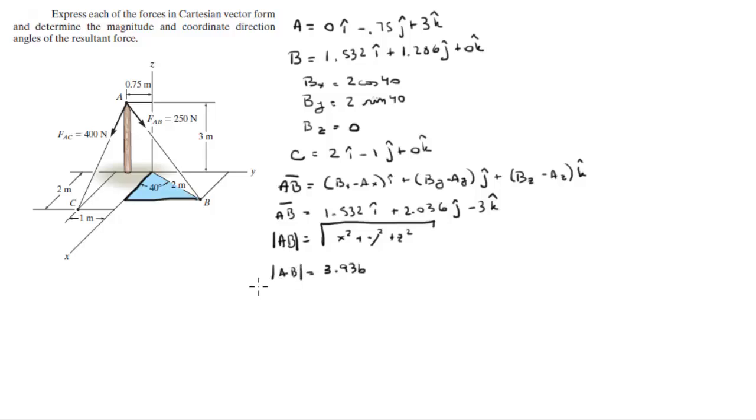So now what you're going to do is find the unit vector AB, and unit vector can be found by dividing each of the components by the magnitude of the total vector.